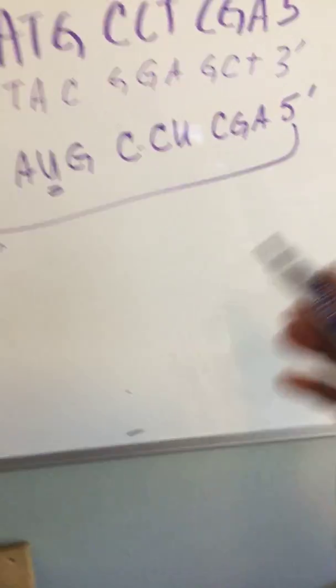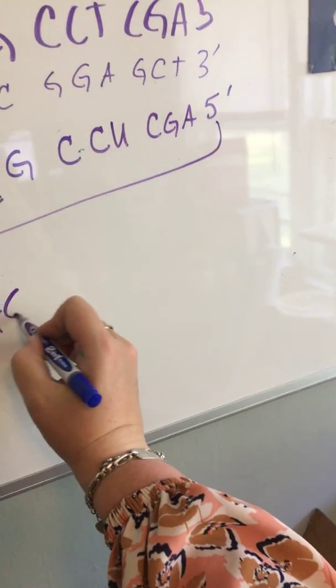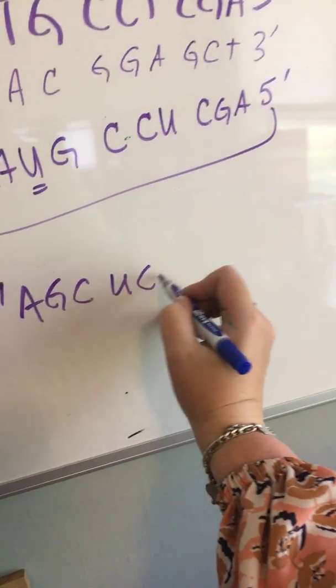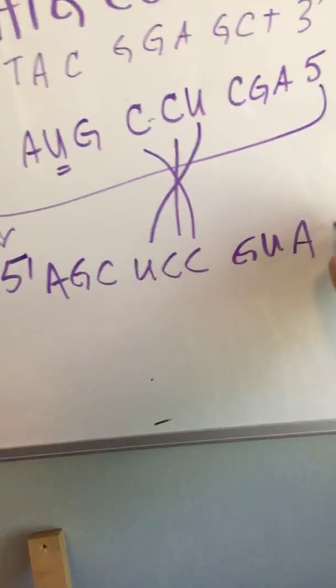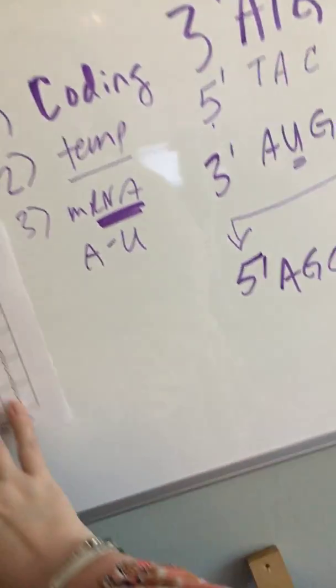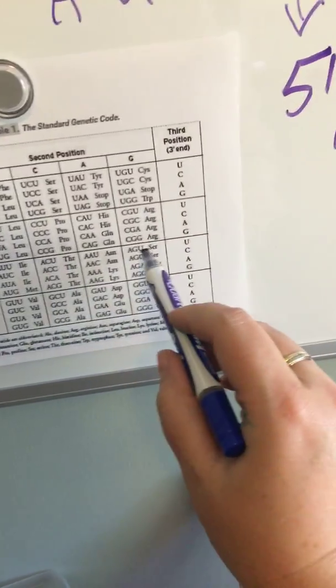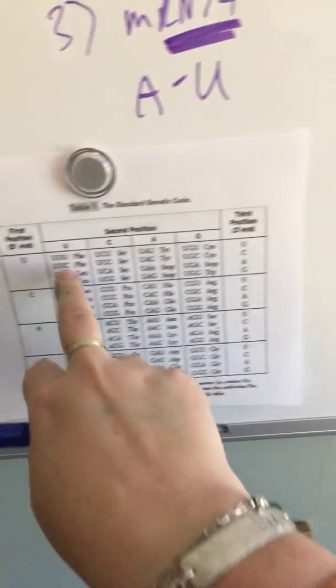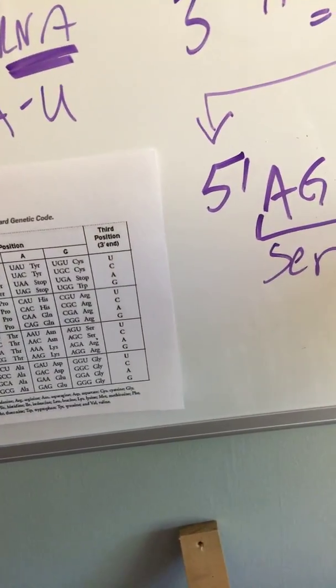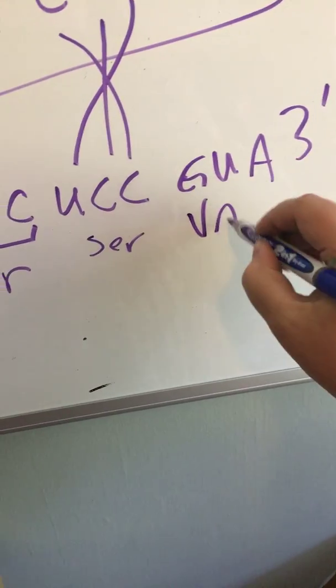We're not changing the necklace, we're just going to read from right to left. This is still messenger RNA and becomes 5' AGCUCCGUA. G-U-A is valine.